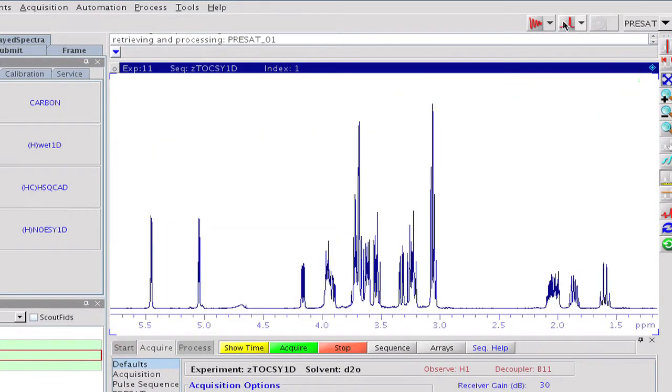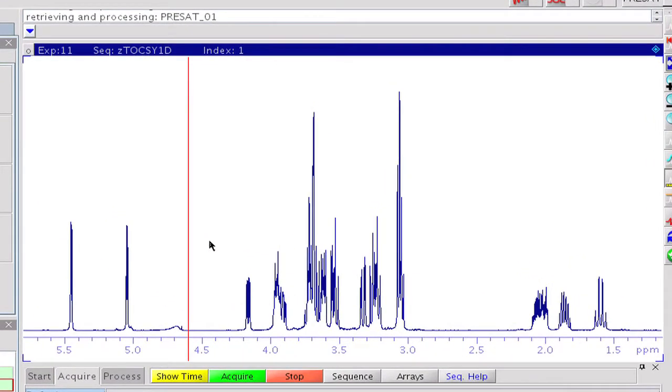Both can be achieved by positioning two cursors around the multiplet we intend to monitor. The frequency difference between the two cursors defines the requested selectivity.